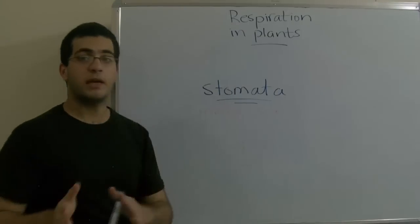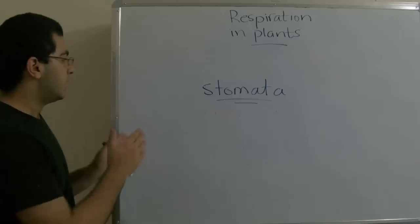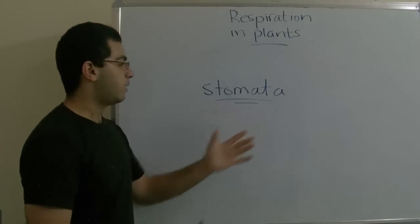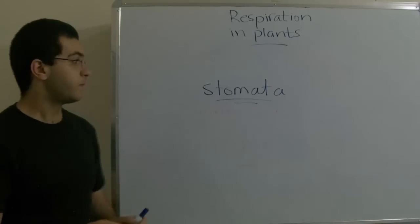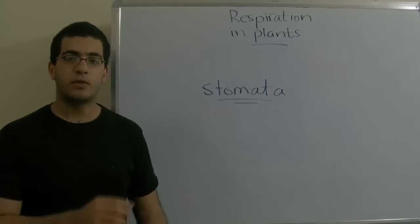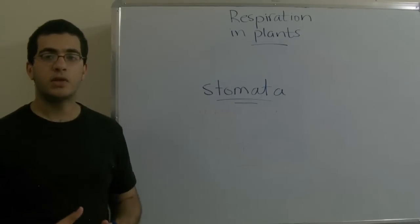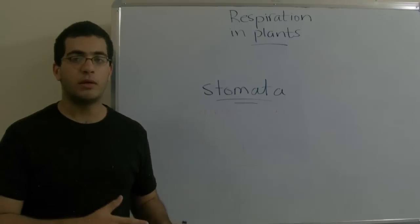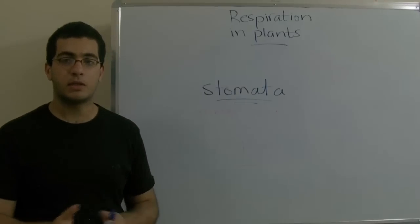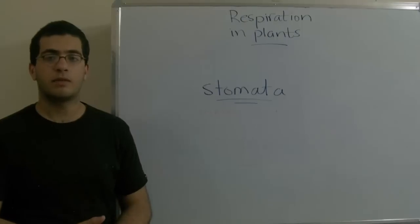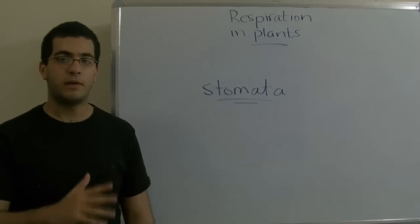Oxygen diffuses from the outside medium into the plant through the stomata which open and close. After the oxygen goes inside the plant through these stomata, it diffuses from one cell to another through the intercellular spaces which are found between the cells of the plant till it reaches the phloem tissues.